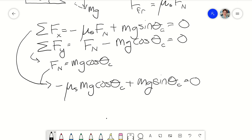μs mg cos θ plus mg sin θ equals zero. So we're solving for μs, so we get μs multiplied through by minus one, and we get mg sin θ divided by mg cos θ.